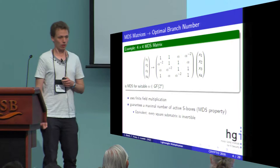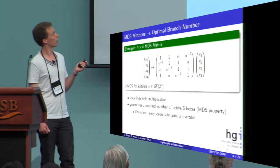In this example, we see that if we choose a generic field element alpha, then we can make this matrix MDS for a suitable alpha.